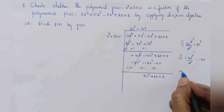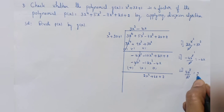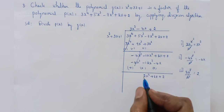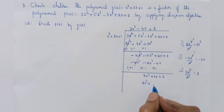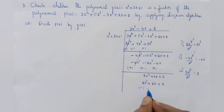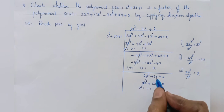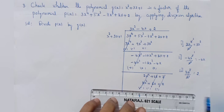Divide 2x square by x square — x square gets cancelled, you get 2. Write 2 in the quotient. Multiply by 2: x square into 2 is 2x square, 3x into 2 is 6x, plus 1 into 2 is 2. Change the signs. Plus 2x square minus 2x square get cancelled. Plus 6x minus 6x cancelled. Plus 2 minus 2 get cancelled — you got 0.